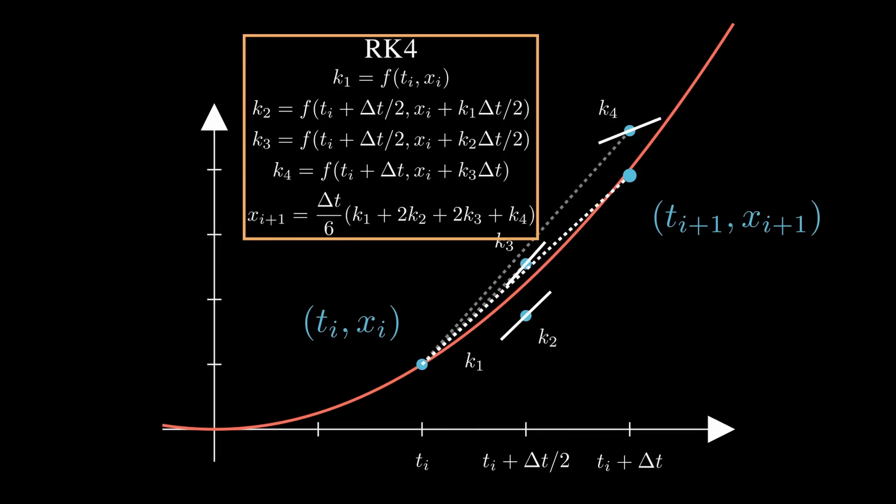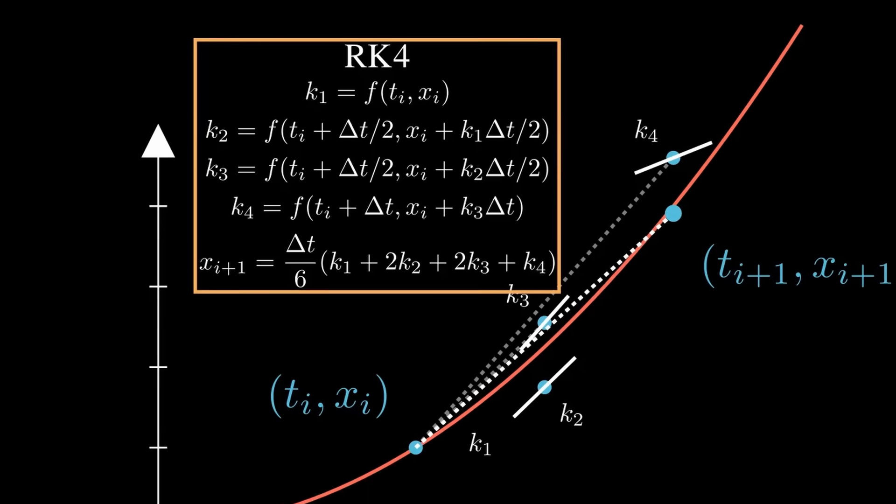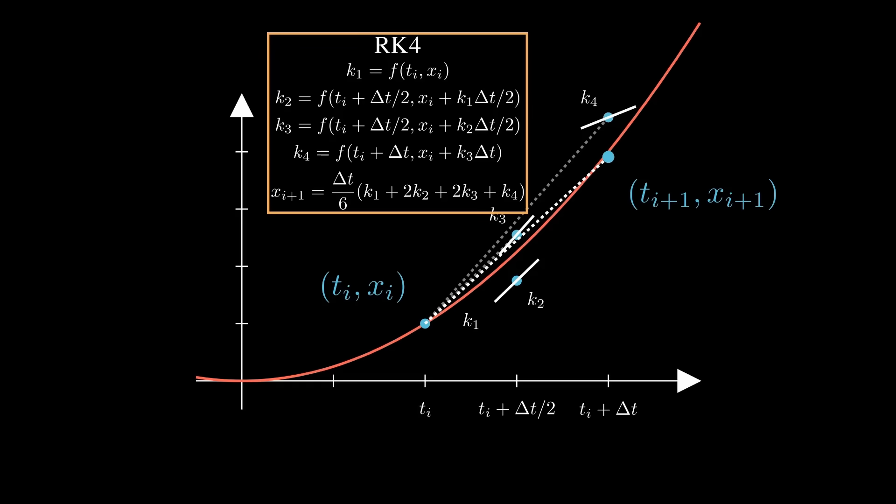Notice that k₂ and k₃ are weighted more heavily than k₁ and k₄. The reason for this comes from the actual derivation of RK4 involving Taylor series, and I won't get into that here. I'm more trying to build an intuition for why and how Runge-Kutta methods would be used.